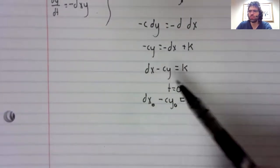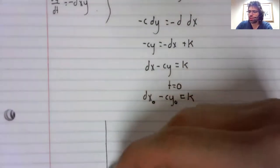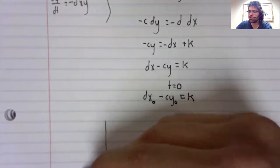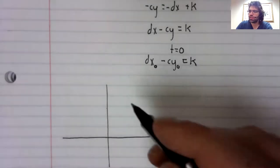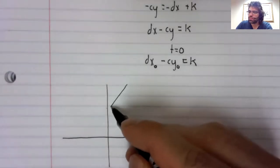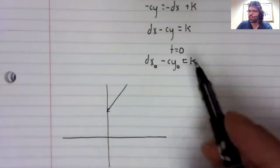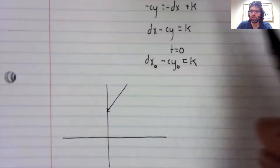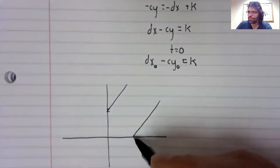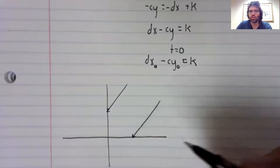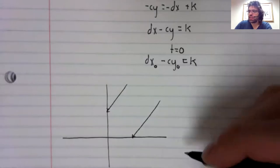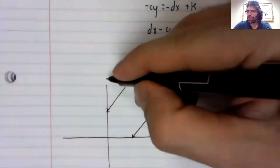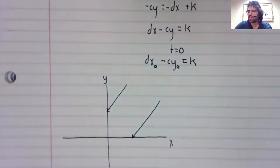So what these trajectories look like, they're just straight lines. This is linear. Straight lines coming in and hitting one of the axes.